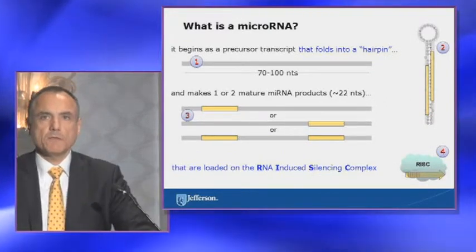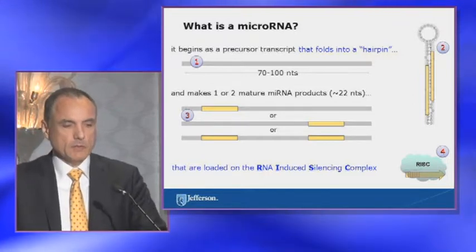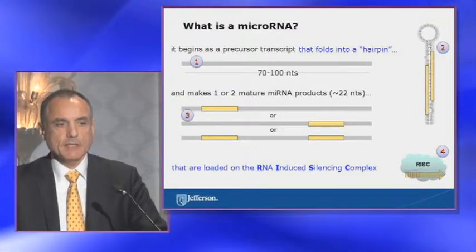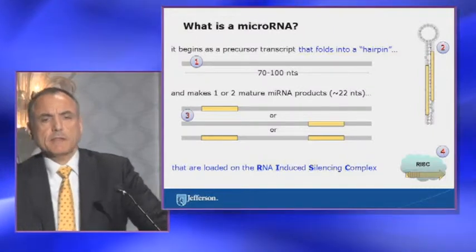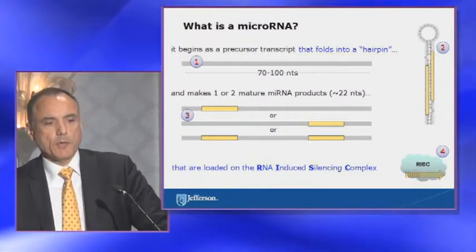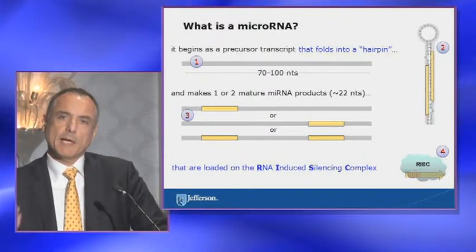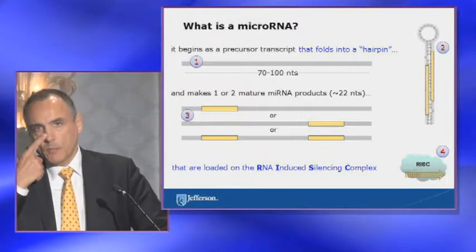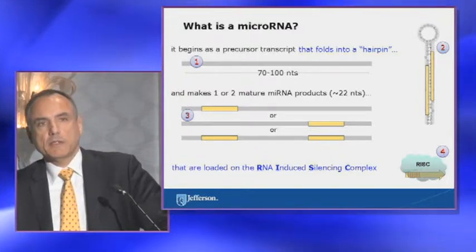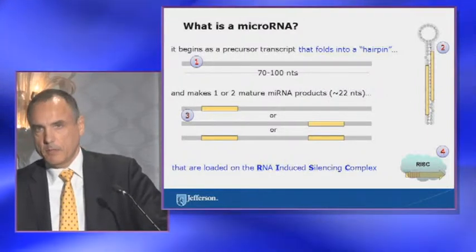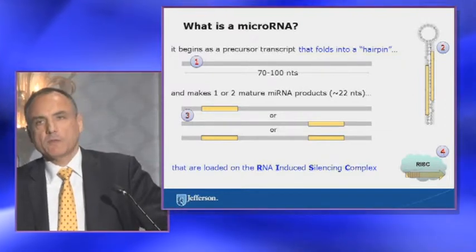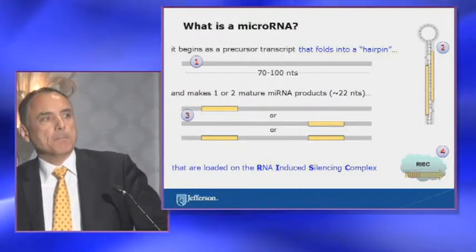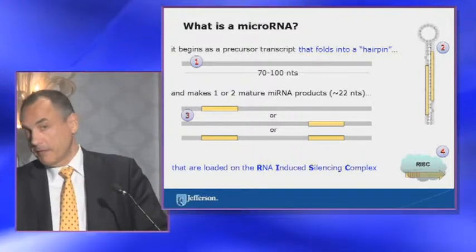For those not familiar with this context, a microRNA begins as a precursor transcript, roughly 70 to 100 nucleotides. That transcript folds naturally into a hairpin, and the hairpin gets processed and makes one or two products. The products can come from the left arm of the hairpin, the right arm, or both. This is preparatory for the last step, where the products are loaded on the so-called RNA-induced silencing complex — basically a complex involving argonaute and other proteins. Think of it as a loaded gun: the complex is the gun, the microRNA is the bullet, and the bullet has specific preferences for targets.